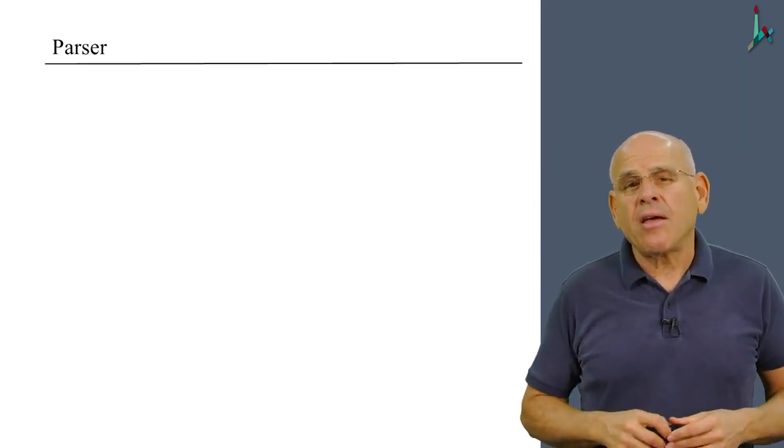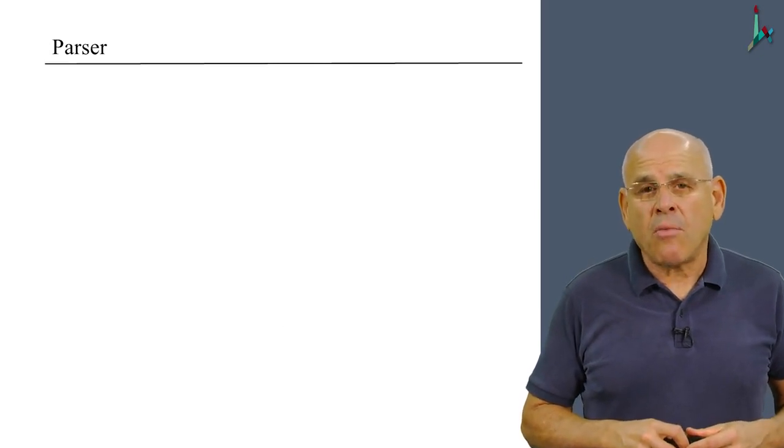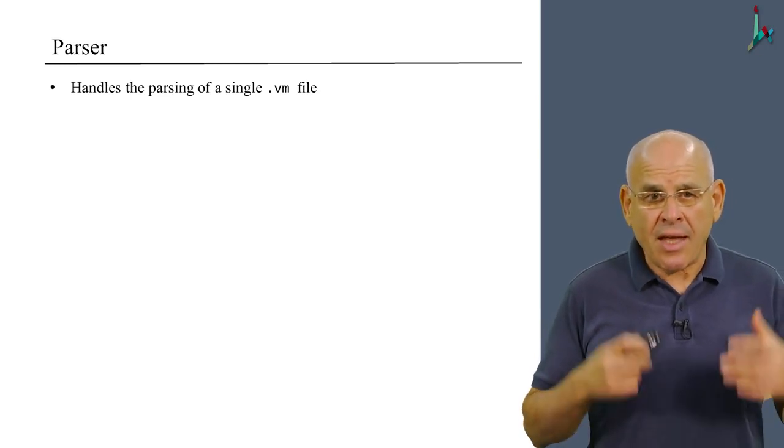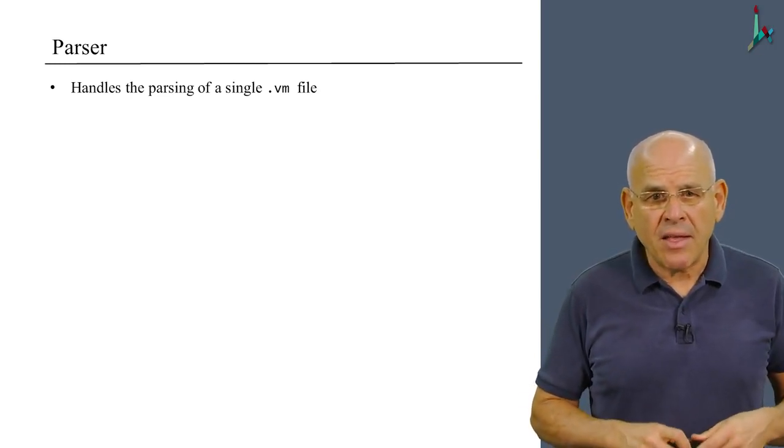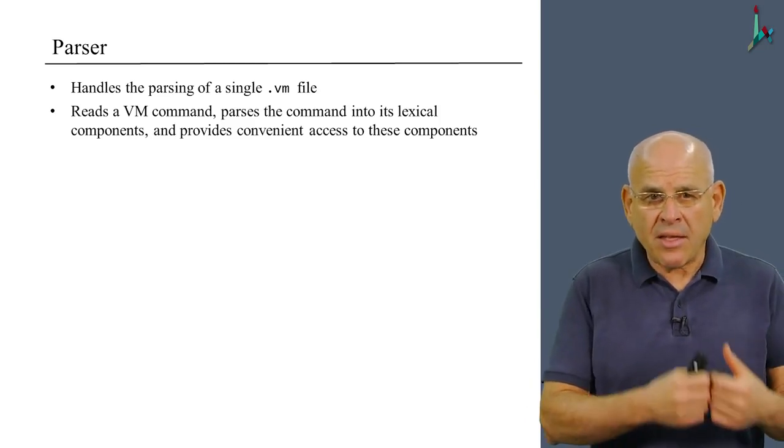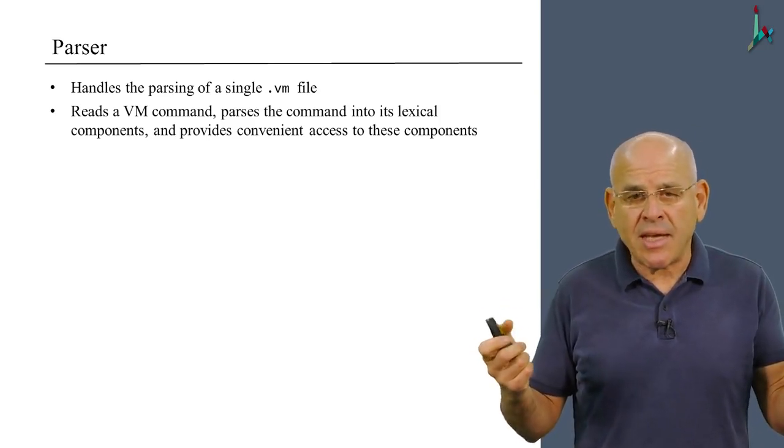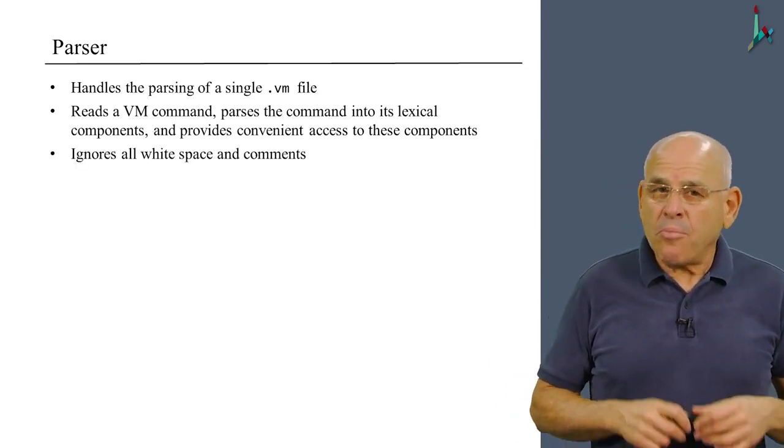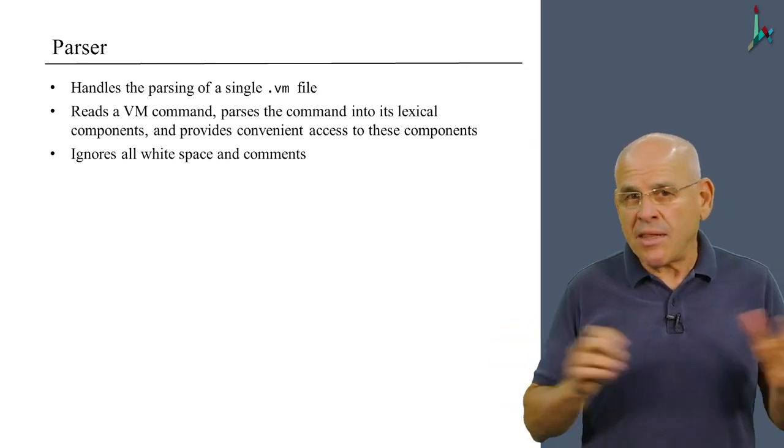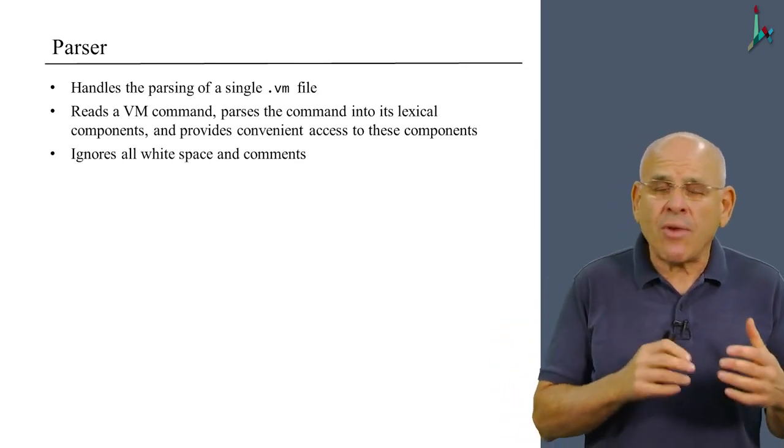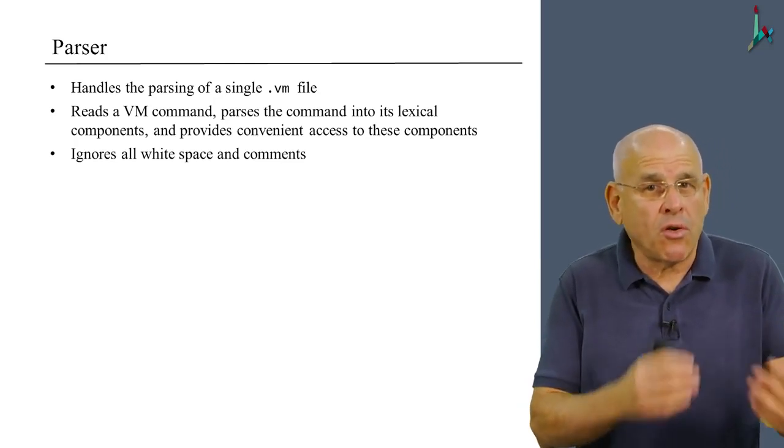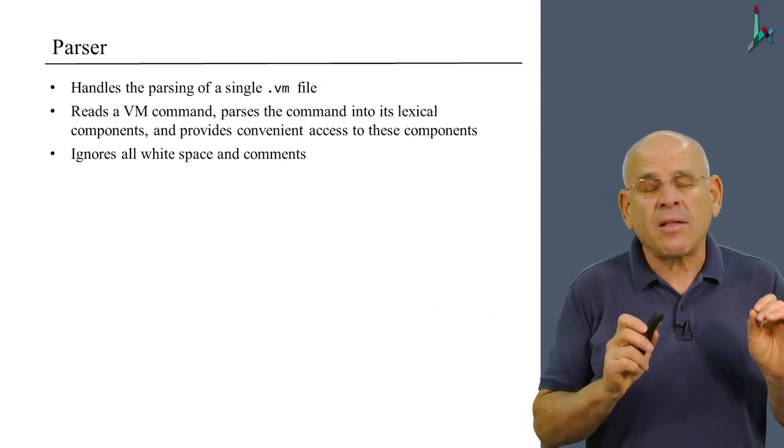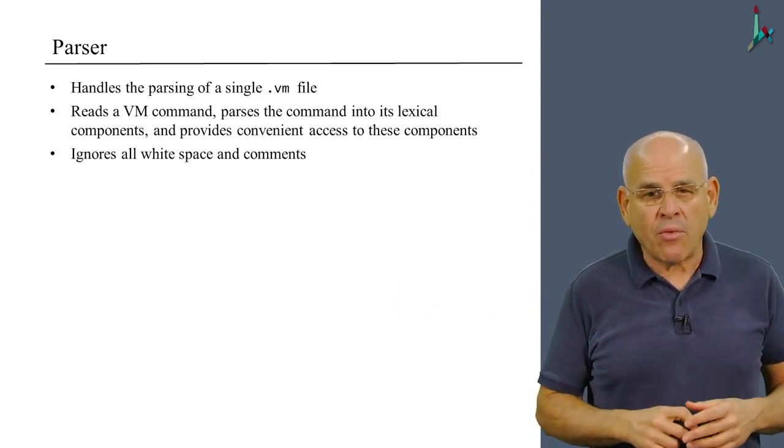Alright, so here's the API of the three modules, actually the two remaining modules, the parser and the code writer. The parser, once again, handles the parsing of a single VM file. It reads a VM command, breaks it into its individual elements, and passes this information to the code writer. And in the process, it also removes all the white space and the comments from the source file. So it doesn't really remove them, it simply ignores them. It goes over the white space and focuses only on the real essence of the file, which are the commands themselves.